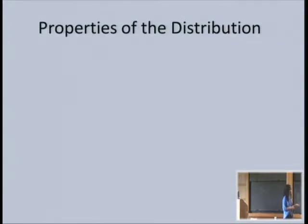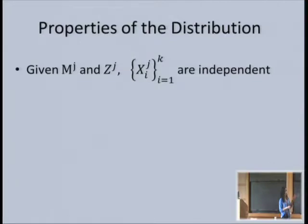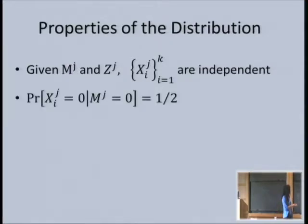Some easy properties of this distribution: if I tell you the mode and the special player selected, the inputs are independent given this information. For easy coordinates, they're always independent given it's easy. For hard coordinates, given that it's hard and given the player who has a zero, you know the inputs are fixed, so they're independent.